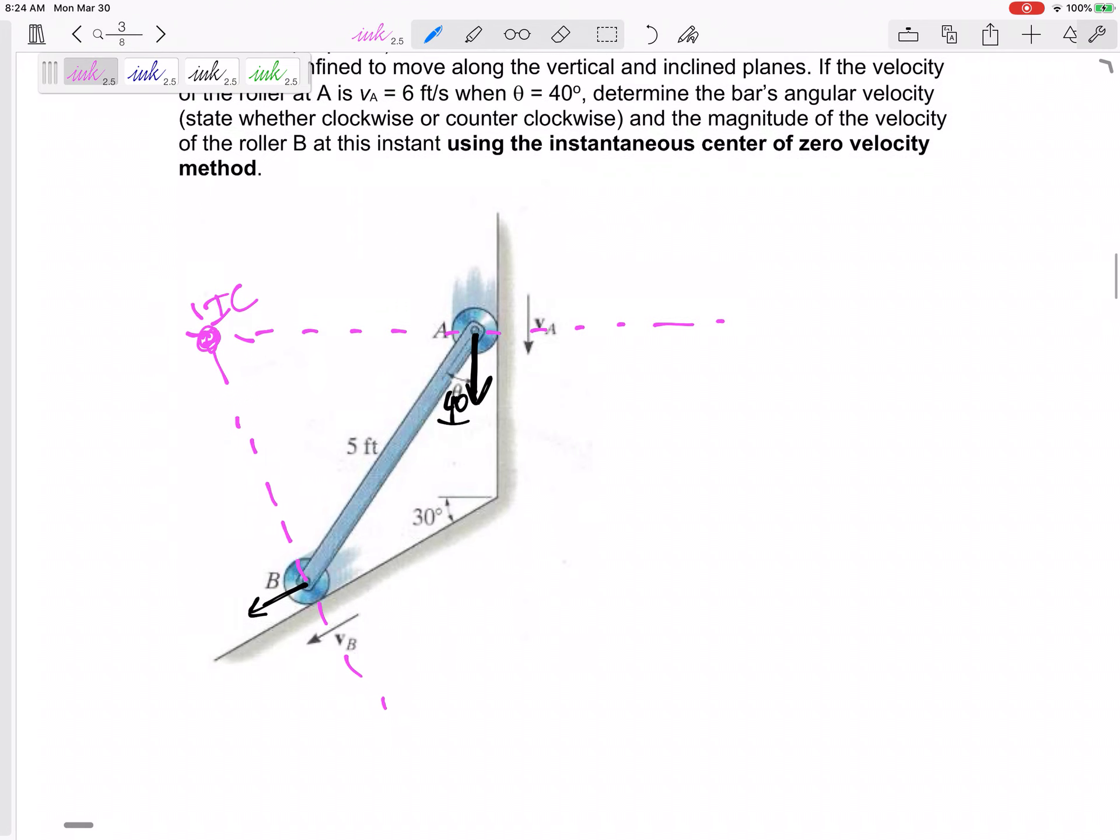Get that instantaneous center correct and find our A, find our B. So I like to look at this triangle right here, kind of figure out, okay, what do I know about that triangle? I know one side is 5. The other side, that's what I'm trying to find.